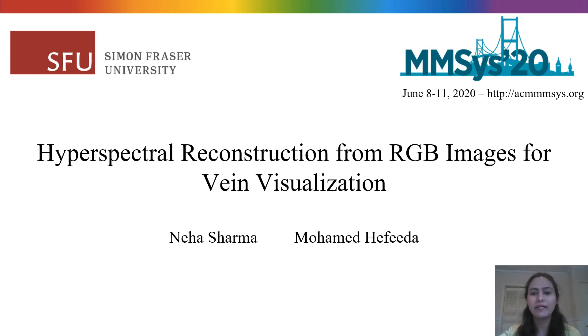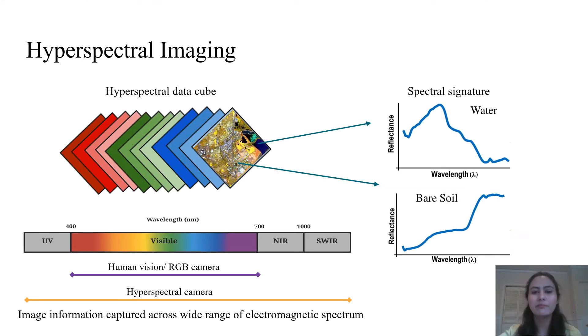We present a method for hyperspectral reconstruction from RGB images for vein visualization. Hyperspectral images contain information in a wide range of the electromagnetic spectrum including the infrared and ultraviolet range, as opposed to regular RGB images which contain information only in the visible spectrum.